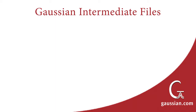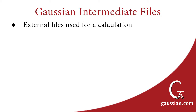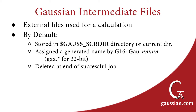Gaussian uses several intermediate files throughout the execution of a calculation. By default, they are stored in the Gaussian scratch directory, designated by the GAUSS_SCRDIR environment variable, or in the current directory. If no names are specified for these files, they are assigned auto-generated names. Unless you specify otherwise, these intermediate files are deleted at the end of a successful calculation.